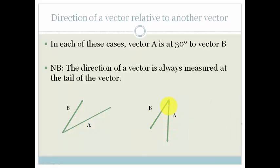We've got A and B. And, again, you'll notice that their tails are together. So, when we're looking at this, this there is the 30 degrees, because we take it from the tail of the vector. That there is 30 degrees, and that there is 30 degrees.